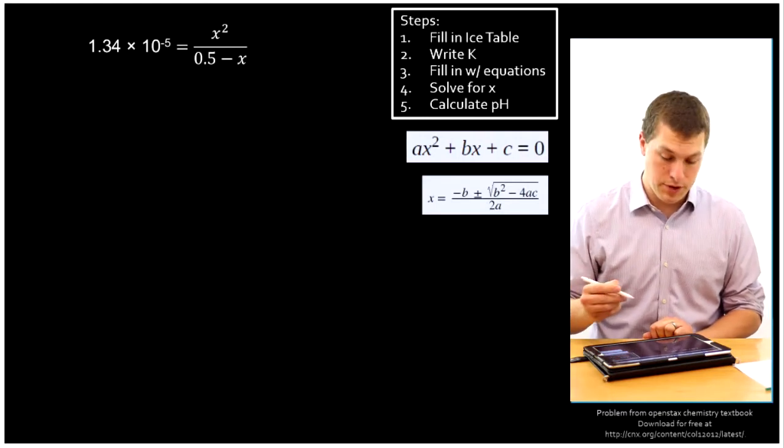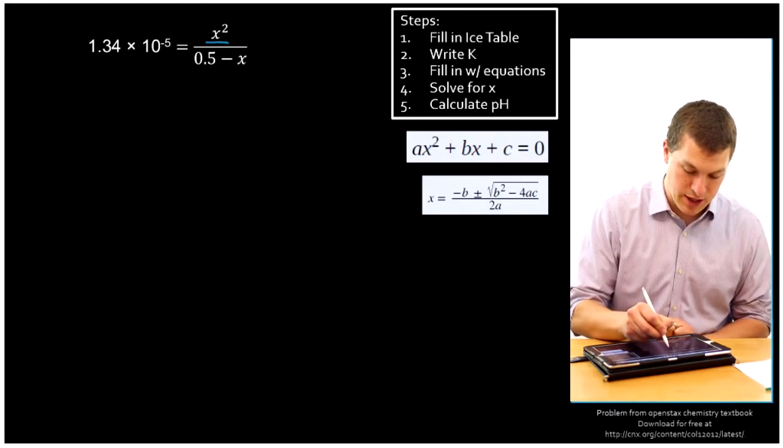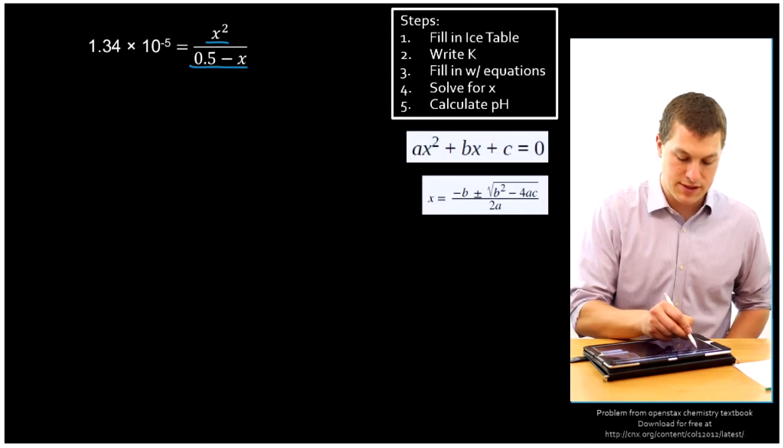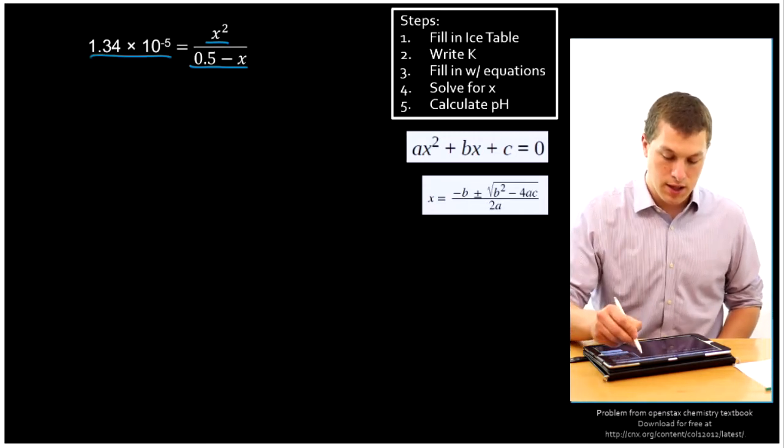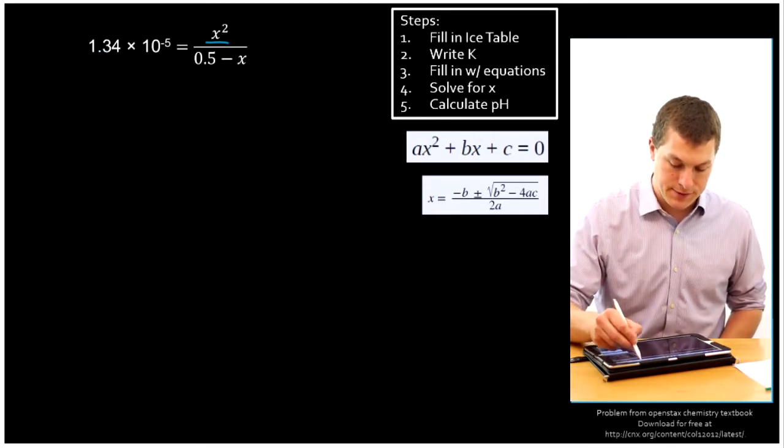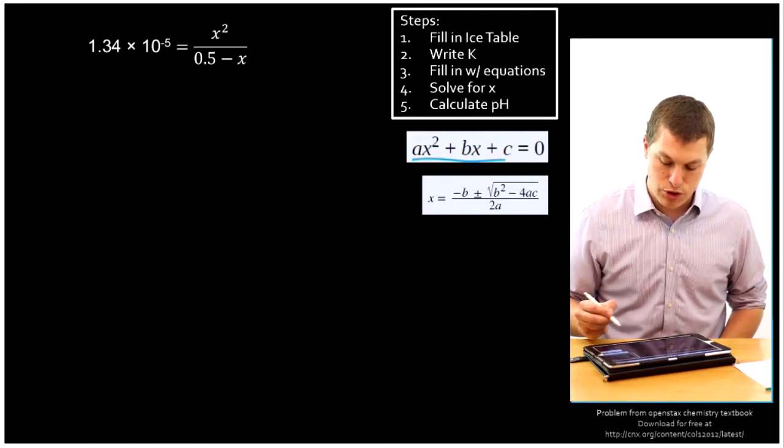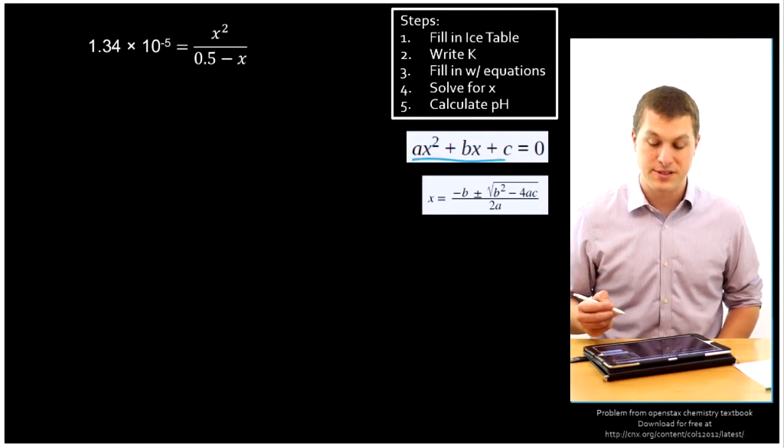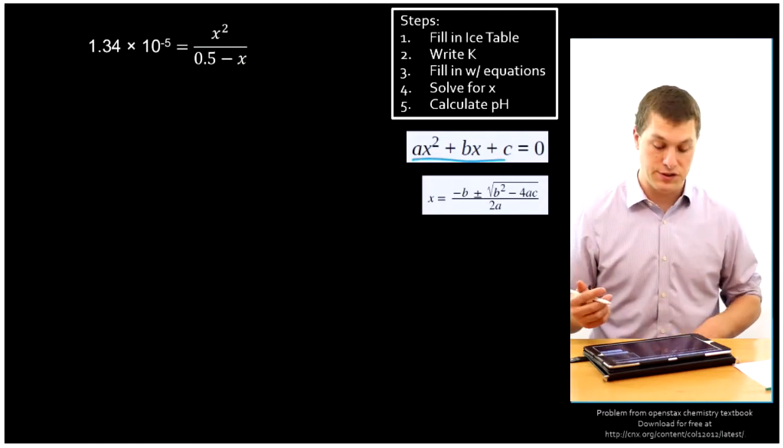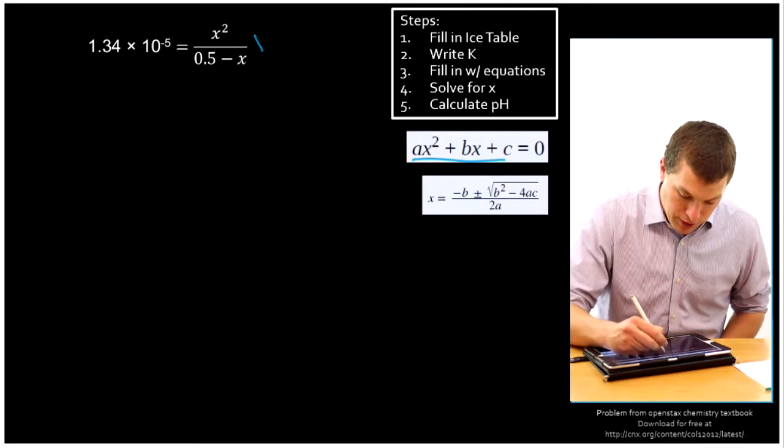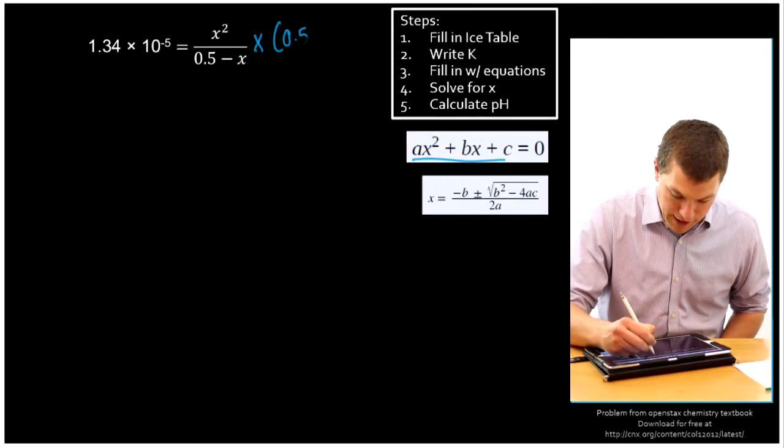So here's our equation from the previous page. We know we have X squared up top, 0.5 minus X on the bottom. This is our K-A value just plugged in. And now we're going to solve for X. We're going to need to do that using the quadratic equation. And so our first step is to get the whole equation equal to 0. We're going to start by multiplying both sides by 0.5 minus X.